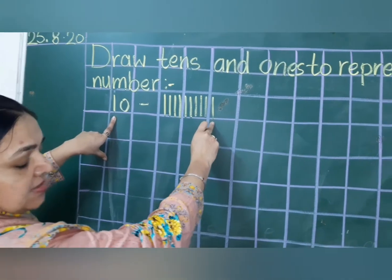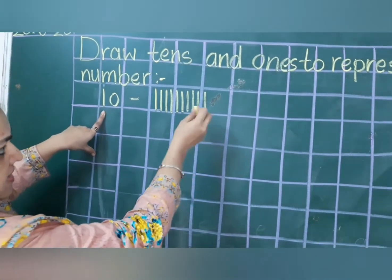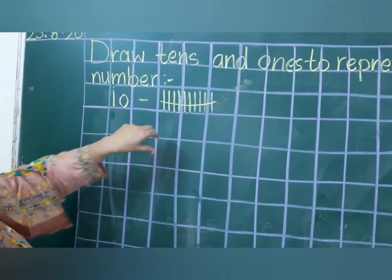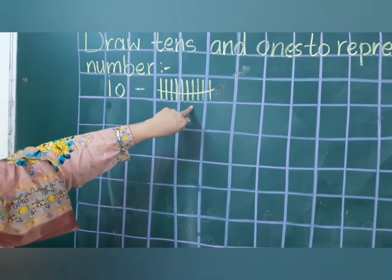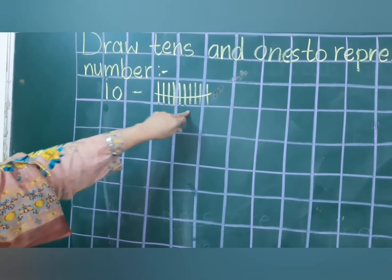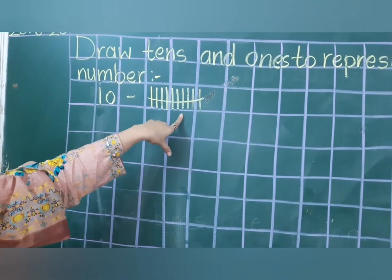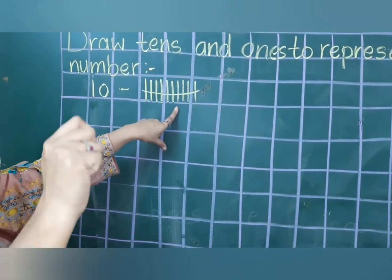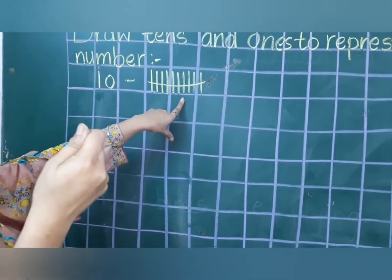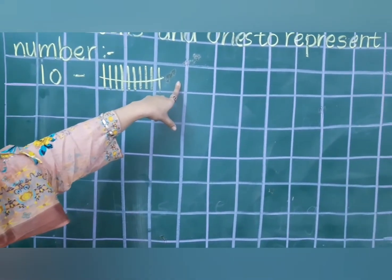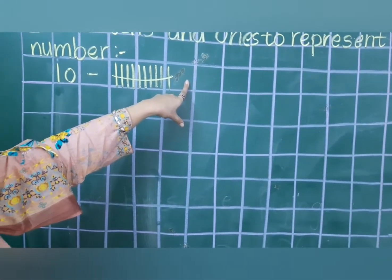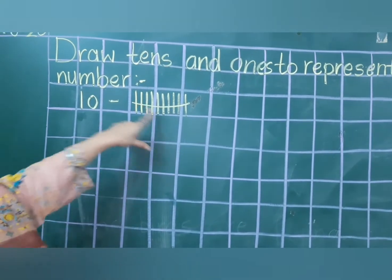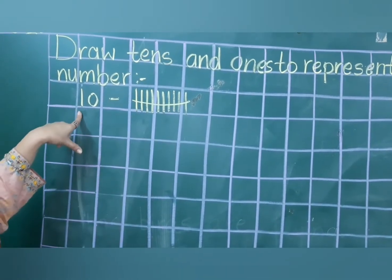I am having ten sticks. Now I have to tie a rubber band like this — then only it becomes a bundle. That is one bundle and there is nothing on ones place, zero. So we are not going to draw any extra stick. One bundle is always equal to ten.